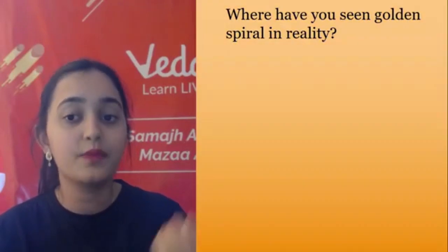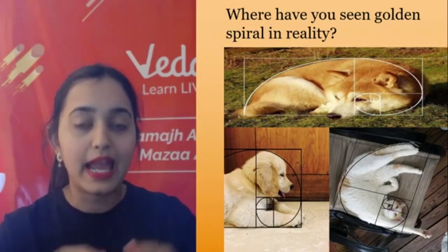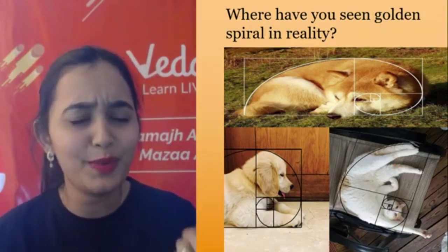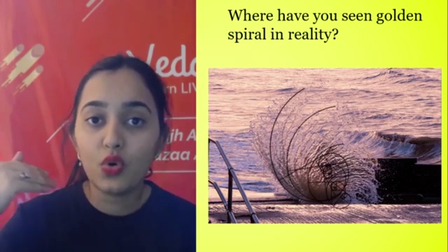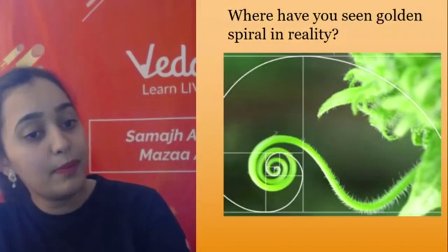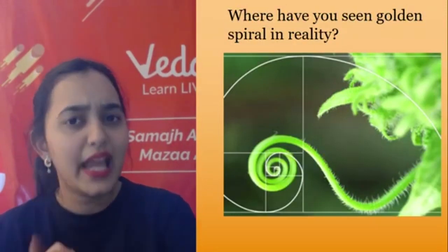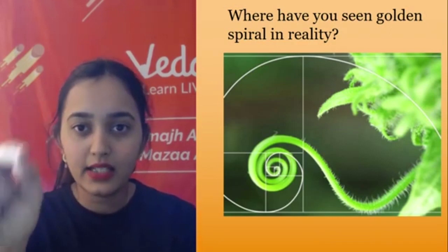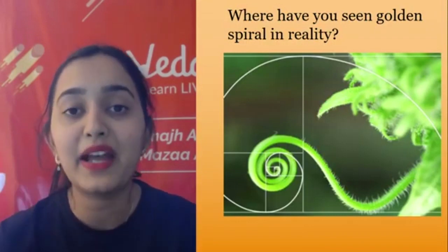Where do we see the Golden Spiral in nature? If you observe snail cones or seashells, they follow the Golden Spiral. When pets — dogs and cats — curl up to sleep, they form the Golden Ratio spiral, which is why they look so cute and attractive to us. Similarly, sea waves when they hit the shore form a Golden Spiral. Plants in nature also form the Golden Spiral — climbers like karela or lauki, when they climb, they wrap around in a Golden Spiral.